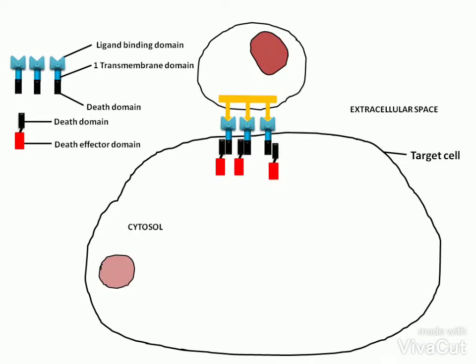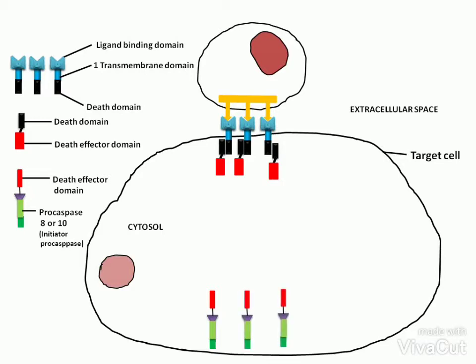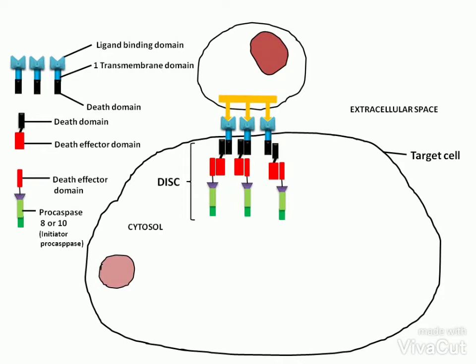Each death effector domain of each cytosolic initiator pro-caspase — like pro-caspase-8 or pro-caspase-10, or both — binds to the death effector domain of each FADD protein. The initiator pro-caspase is the first pro-caspase to be activated. The binding of death effector domains of each FADD and initiator pro-caspase forms the death-inducing signaling complex, or DISC. Within the DISC, the initiator pro-caspases are brought into close proximity, which activates them.